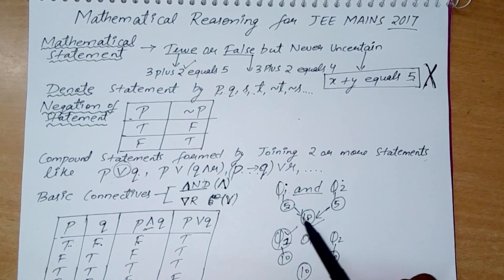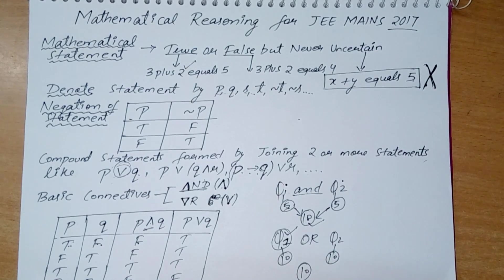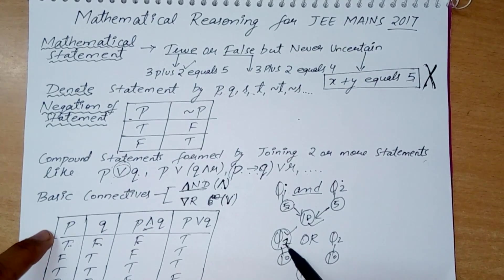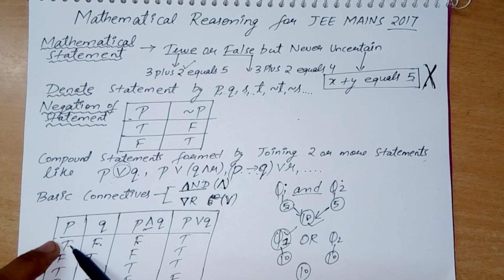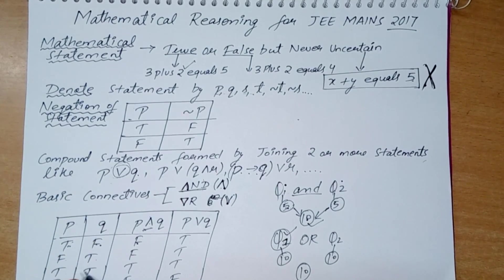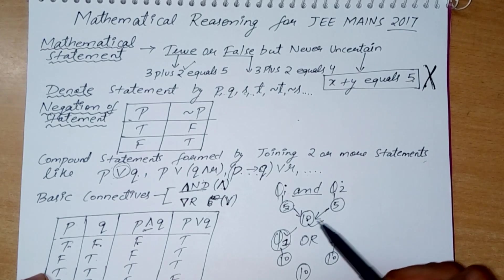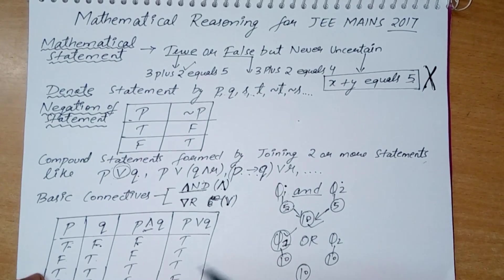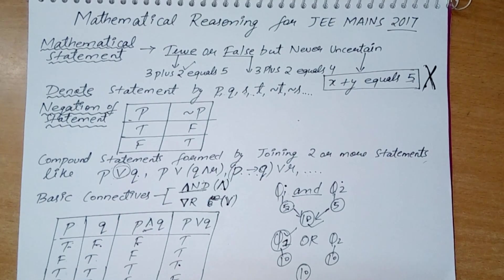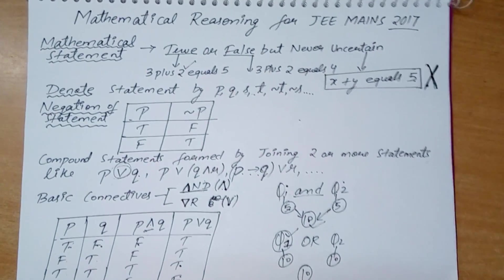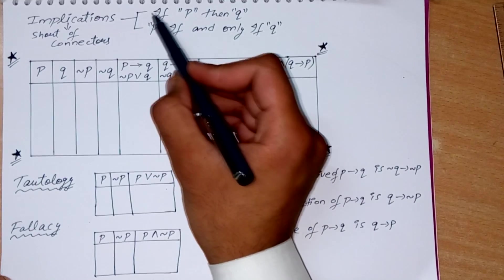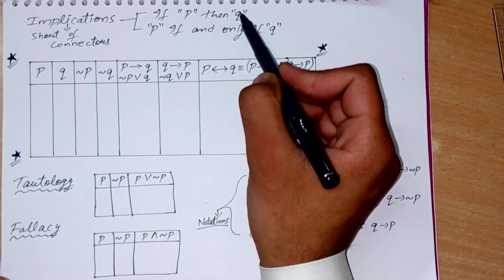For OR: if question one or question two has to be attempted and each contains 10 marks, attempting only one gives true. Attempting both also gives true. Attempting neither gives false. So OR is true whenever at least one condition is met.